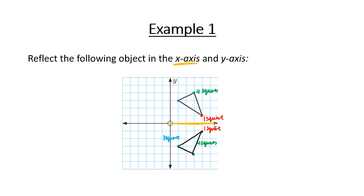For a reflection in the y-axis, the y-axis is now our mirror line and we do the exact same thing. The blue dot is one square away from the y-axis, so its reflection is one square away. The green dot is three squares away, so its reflection is three squares away. The red dot is four squares away, so its reflection is four squares away. Connecting those dots gives a reflection in the y-axis as well.